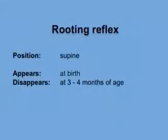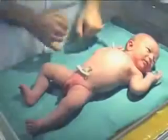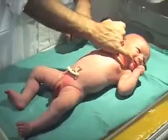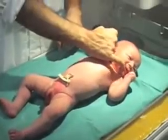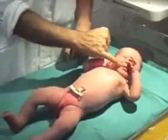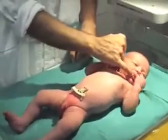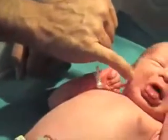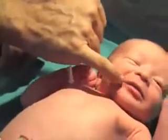Routing Reflex. Appears at birth and disappears at 3-4 months of age. With the baby's head positioned in the midline and hands held against the anterior chest, stroke with your finger the perioral skin at the corners of the baby's mouth and the midline of the upper and lower lip.